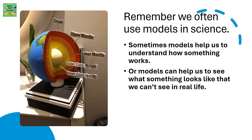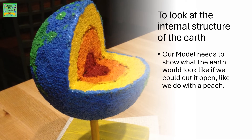Remember, we often use models in science. Sometimes models help us to understand how something works, or models can help us to see what something looks like that we can't see in real life. To look at the internal structure of the Earth, our model needs to show what the Earth would look like if we cut it open, like we do with a peach.